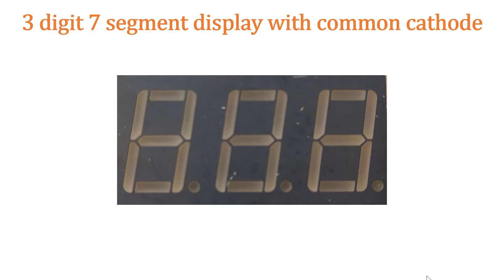In this diagram, you can see a 3-digit 7-segment display with common anode. We need to name these 7 segments using the alphabets. We will call the top horizontal LED as segment A, then the vertical one as segment B, this is segment C, this is segment D, this is segment E, this is segment F, and this is segment G.